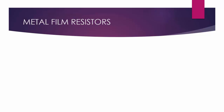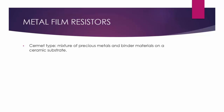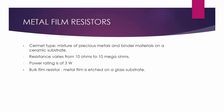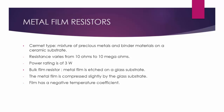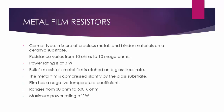The third type of thick film resistor is the cermet type, where a mixture of precious metal and binder material is placed on a ceramic substrate. Resistance varies from 10 ohms to 10 mega ohms, with a power rating up to 3 watts. The fourth type is the bulk film resistor, made by etching the metal film on a glass substrate. The compressed film has a negative temperature coefficient that cancels out the inherent positive temperature coefficient. Resistance varies from 30 ohms to 600 kilo ohms, with a maximum power rating of 1 watt.